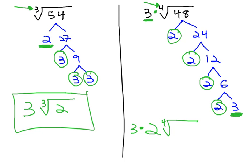What's left inside the radical is just the number 3, and so when we multiply the 3 times 2, we get 6 times the fourth root of 3 for our final solution.